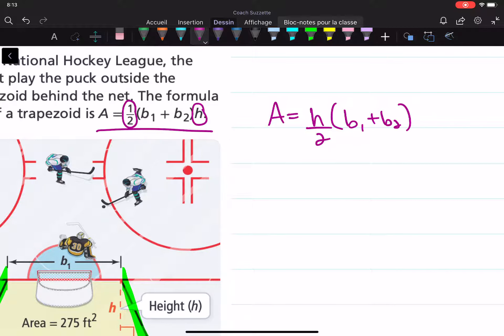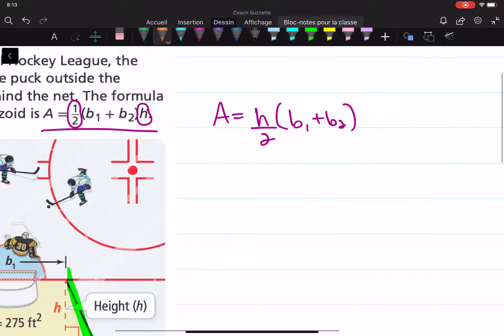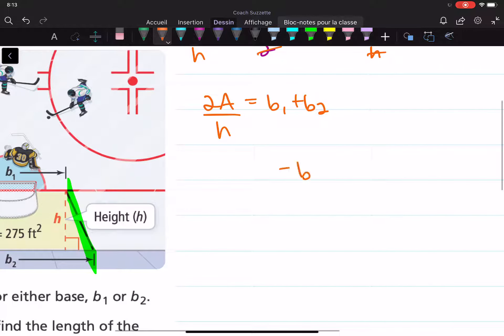Okay, so if I want to isolate b₁, let's start doing the reverse order of the order of operations. So first I want to get rid of this. Multiply by 2 over h on both sides. So we have 2 times A over h equals the sum of b₁ and b₂. Then minus b₂ on both sides leaves us with b₁ equals 2A over h minus b₂.